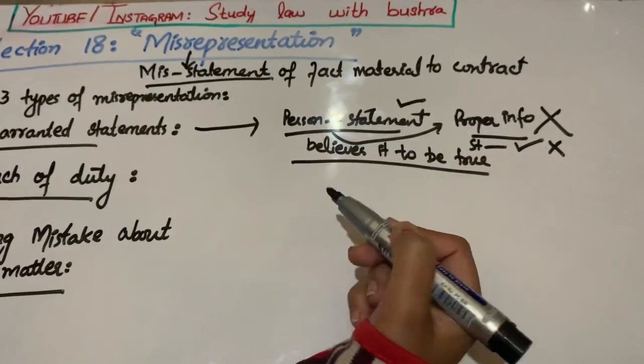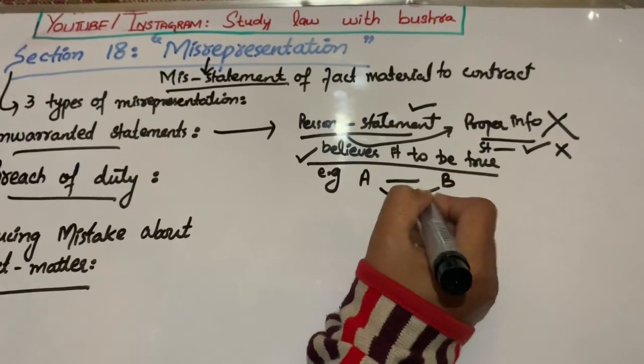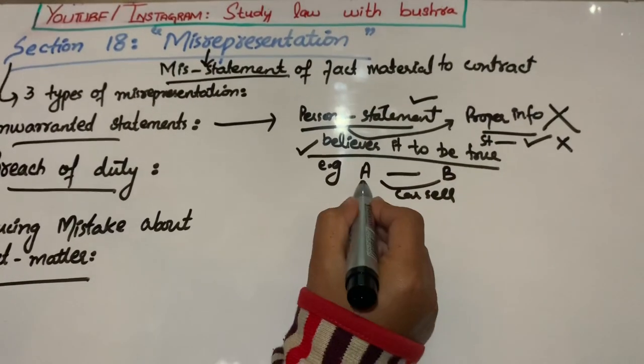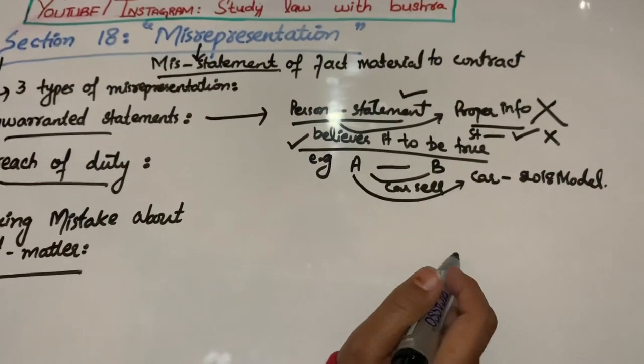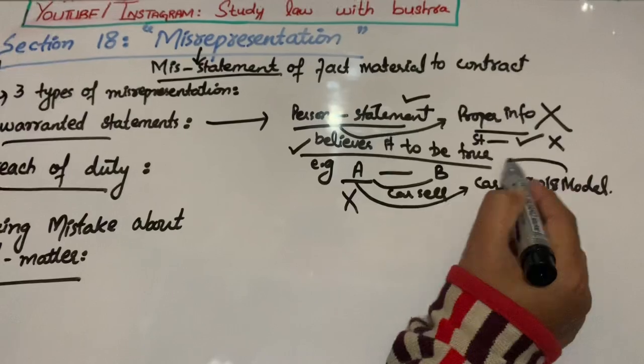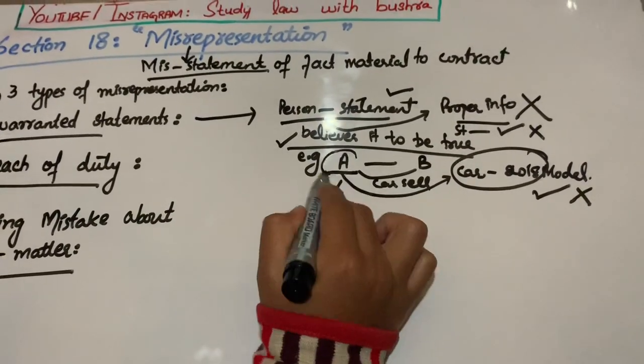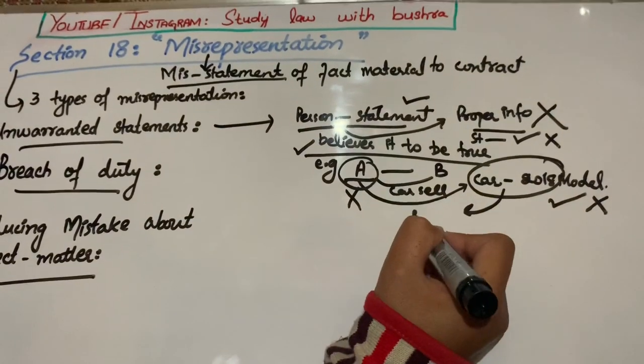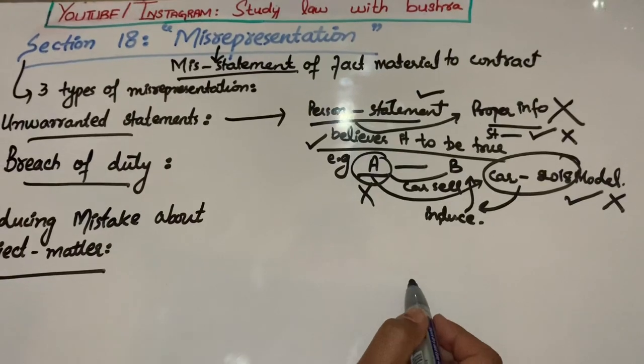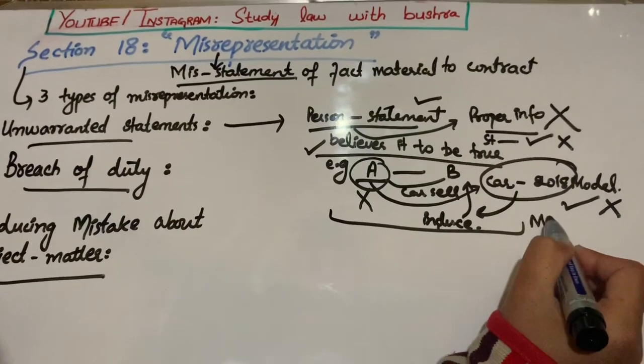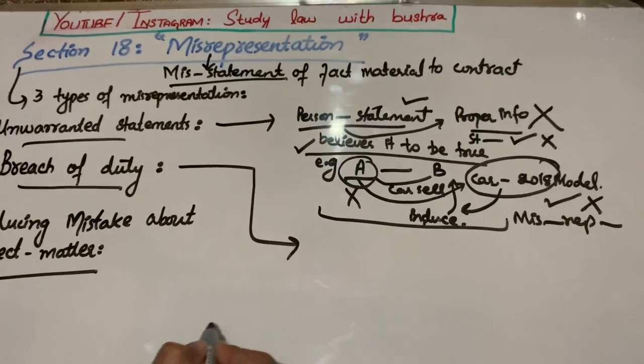For example, A اور B کے درمیان contract ہوا sale of car کا. A, B کو کہتا ہے کہ جو car میں sale کر رہا ہوں وہ 2018 model کی ہے. اب یہاں پر A کو خود بھی نہیں پتا کہ car کس model کی ہے، لیکن وہ genuinely believe کرتا ہے کہ car 2018 model کی ہے. اس کا یہ کہنا B کو induce کرتا ہے کہ وہ A سے car خرید لے. تو یہ کیا ہوا - misrepresentation ہوا، misstatement ہوئی.